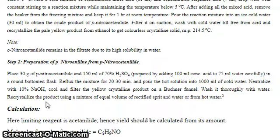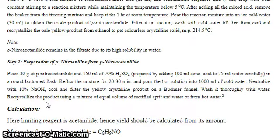Place 30 grams of paranitroacetanilide and 150 ml of 70% sulfuric acid — prepared by adding 100 ml concentrated sulfuric acid to 75 ml water carefully — in a round-bottom flask. Reflux the mixture for 20 to 30 minutes, then pour the hot solution into 1000 ml of cold water. Neutralize with 10% sodium hydroxide, cool, and filter the yellow crystalline product on a Buchner funnel. Wash thoroughly with water and recrystallize using equal volumes of rectified spirit and water, or from hot water.